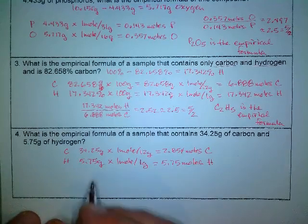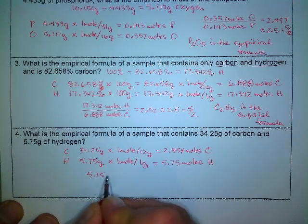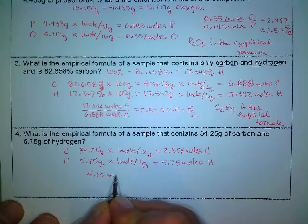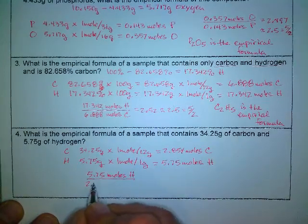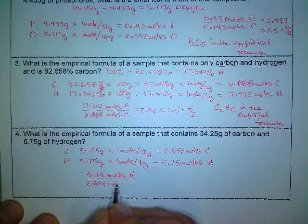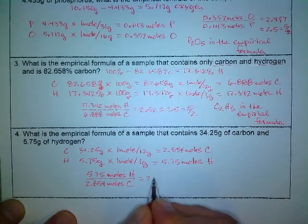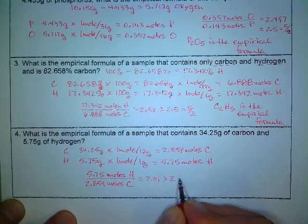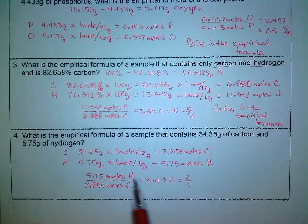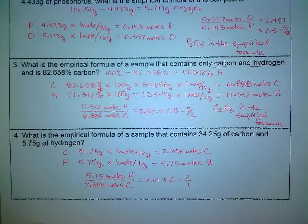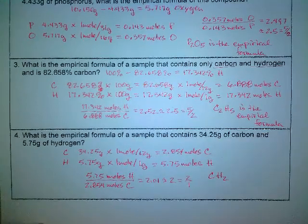So do my mole ratio, bigger one on top, 5.75 moles of the hydrogen over the 2.854 moles of the carbon equals 2.01, which is about 2, which would be a ratio of 2 to 1, so this says I need 2 hydrogens to every 1 carbon. Therefore, this empirical formula would be CH2.